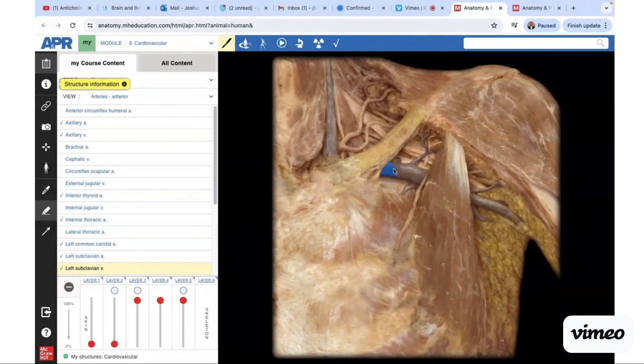This is site one of compression. The next site is the costoclavicular space—costo referring to the first rib, clavicular for the clavicle. It's a tight space already, so you can imagine that could be a compression site.